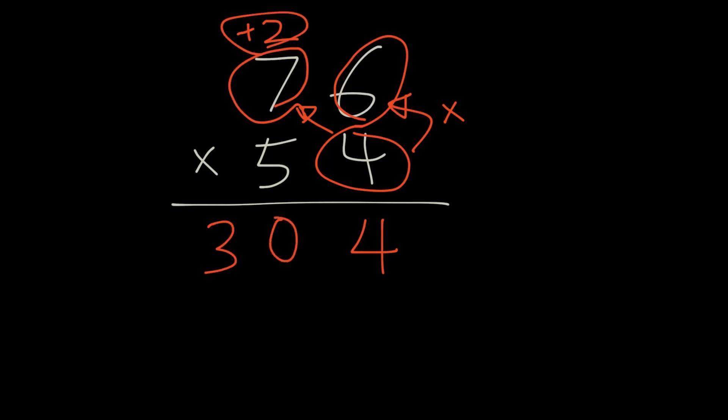Now that we complete the multiplication of 4, we're going to cross it out. Now, we'll also apply the 2 on top already. So, we're going to cross it out too.